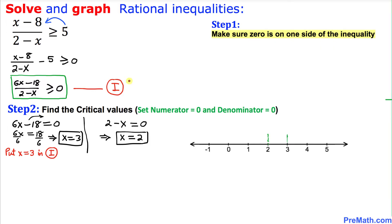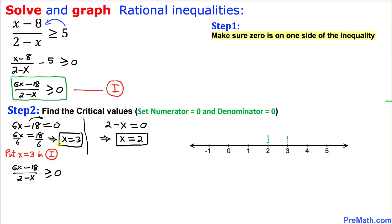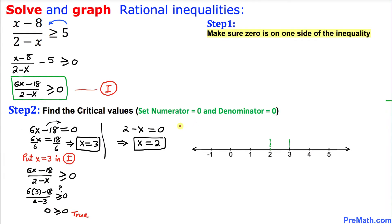Let's substitute x equals 3 into inequality I. This becomes (6 times 3 minus 18) divided by (2 minus 3). On top we get 18 minus 18, which is zero. Zero divided by whatever gives us zero, and zero is greater than or equal to zero — this statement is true. Therefore for the point x equals 3, I am going to put a solid circle.